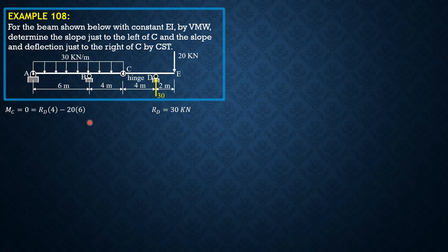As shown, from summation of forces in the y-direction we get 10 kilonewtons downward. By action-reaction, we have 10 kilonewtons just to the left of C acting upward. Considering segment ABC, summation of moments about B equals zero, giving A_y times 6 minus 30 times 10 times 1 — where 1 meter is half the span because the center is 5 meters either way.